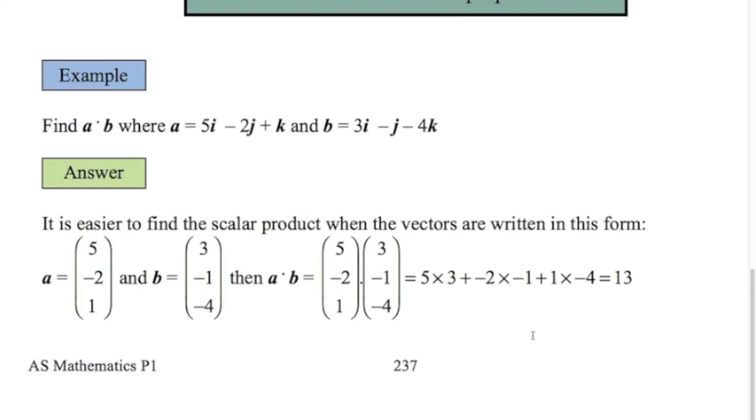So here we've got two vectors A and B, working out the dot product. Pretty simple. Just line them up. 5 times 3 plus minus 2 times minus 1 plus 1 times minus 4. Just be careful with the signs. Maybe type it in your calculator. And the value you get is 13. Now that does have a geometric interpretation, but it's a little bit tricky. So I've decided to not go into it here. All you need to know about the dot product is it's a number. It's going to help you find the angle between the two vectors.